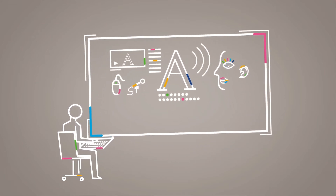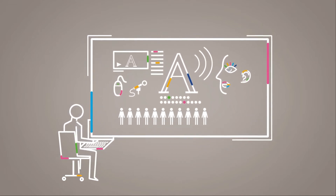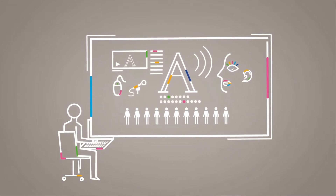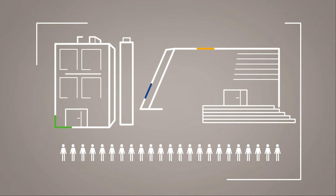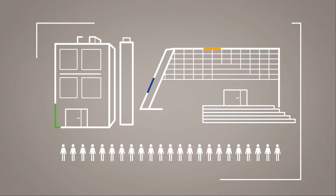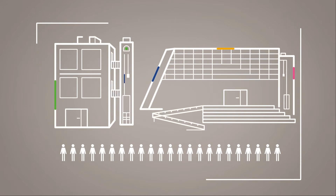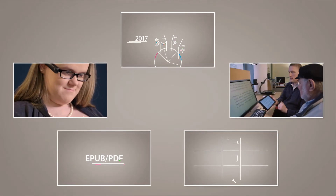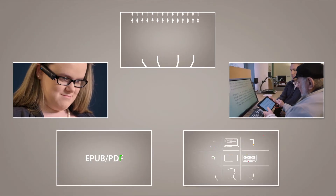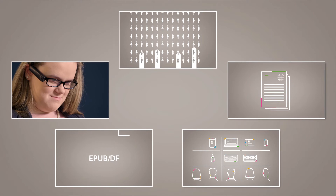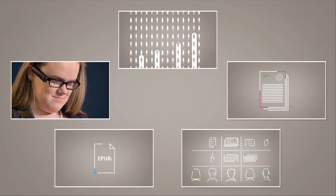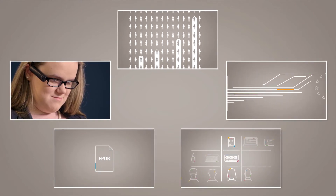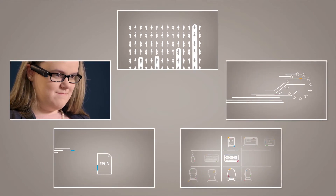As a creator of digital content, you must consider the needs of the widest number of people, in the same way an architect would do when designing an accessible building. This series of videos about accessibility mainly refers to digital publications accessed via personal computers and mobile devices.